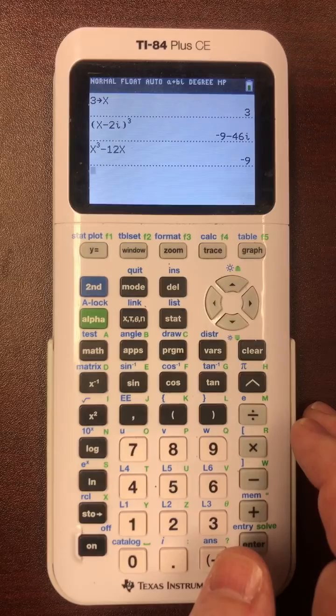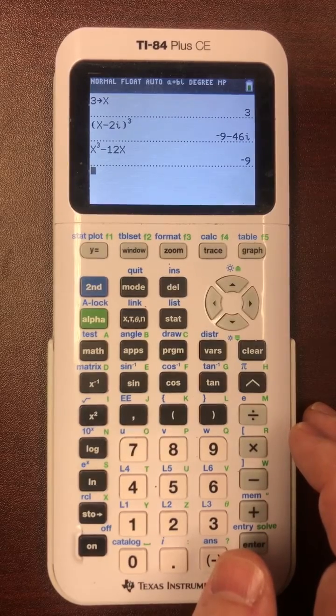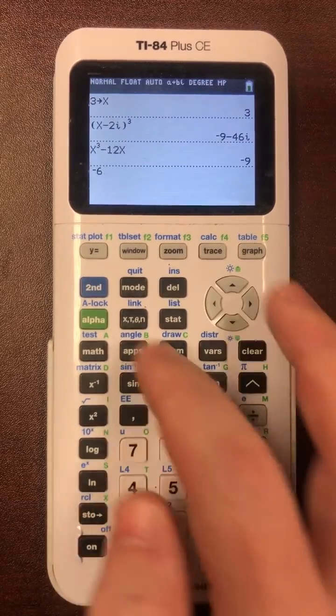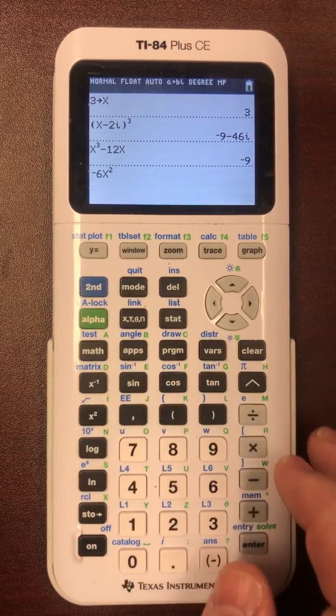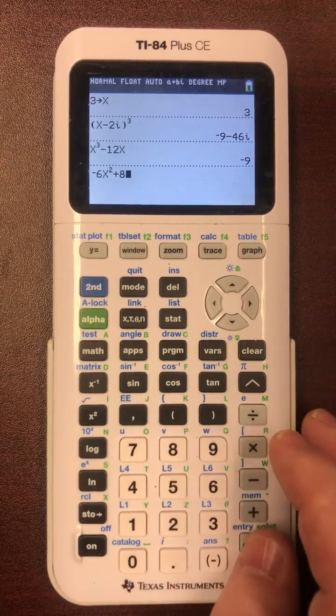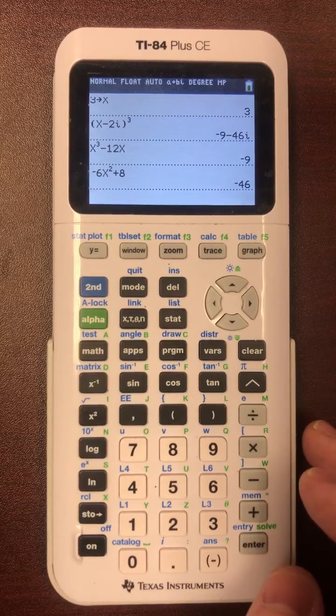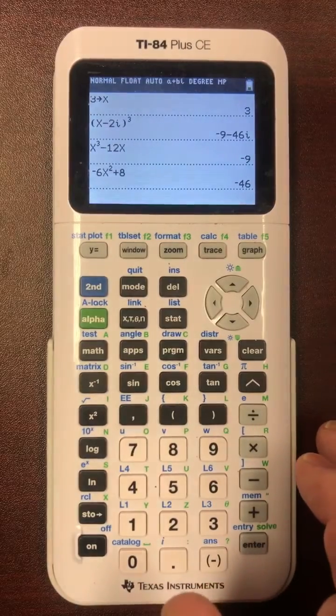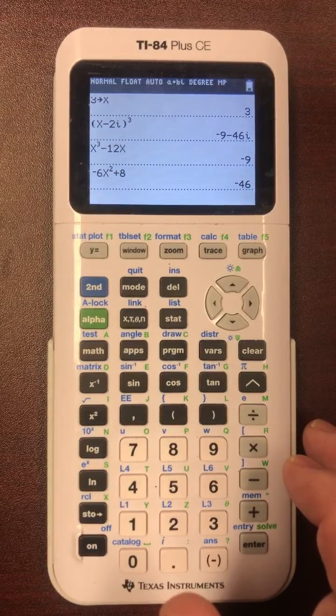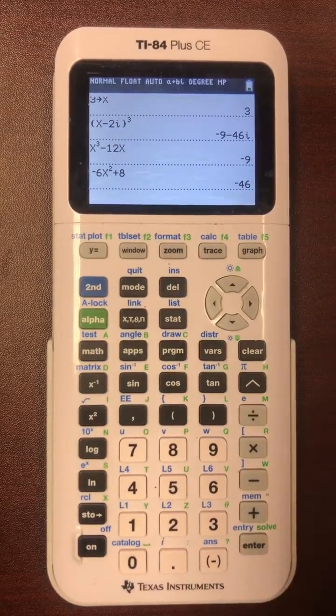Now let's look at the non-real terms, the imaginary number terms. We can type in the coefficients, negative 6x squared, and the other term is going to be plus 8. And there we have it, negative 46. So typing in two quick things would do what would otherwise take half a page of expansion of terms and save a lot of time.